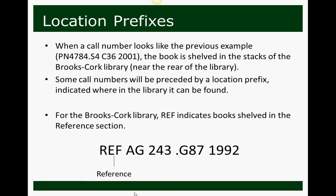Sometimes call numbers have prefixes. When the call number looks like the previous example — PN 4784 — the book is shelved in the stacks of Brooks Cork Library, near the rear of the library. However, some call numbers are preceded by a location prefix indicating where in the library the book can be found. If it's a reference book, it will be indicated by REF before the call number. For example, REF AG 243.G87 1992 tells us it's a reference book in the AG section.